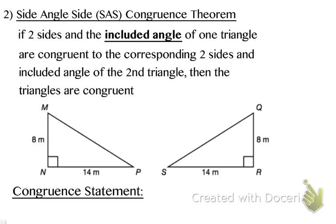The side-angle-side rule states that if two sides and the included angle of one triangle are congruent to the corresponding two sides and included angle of the second triangle, then the triangles are congruent. The first side I'm highlighting is side MN on the triangle on the left, which is eight meters long. Side QR on the other triangle is also eight meters, so side MN is congruent to side QR.